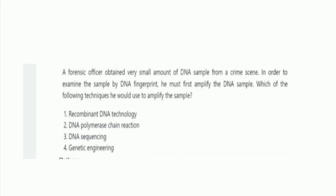Next question: a forensic officer obtained a very small amount of DNA sample from a crime scene. In order to examine the sample by DNA fingerprinting, he must first amplify the DNA sample. Which technique would he use? The options are recombinant DNA technology, polymerase chain reaction (PCR), DNA sequencing, and genetic engineering. The right answer is option 2, polymerase chain reaction.